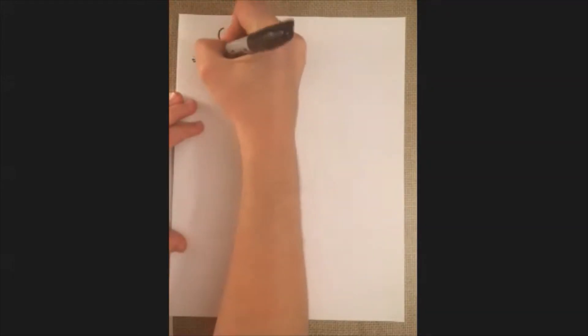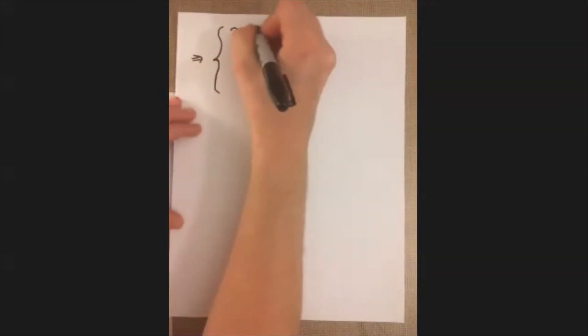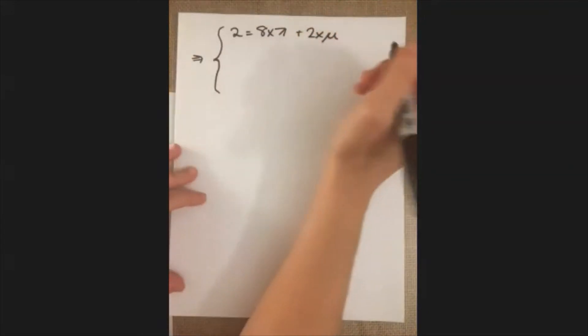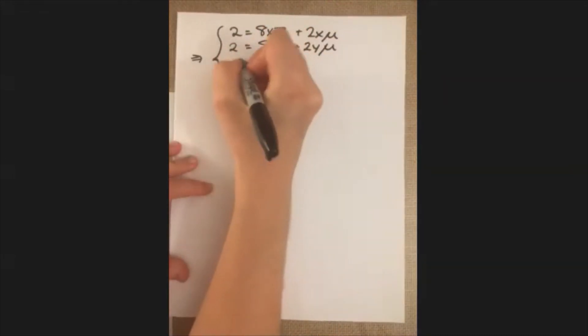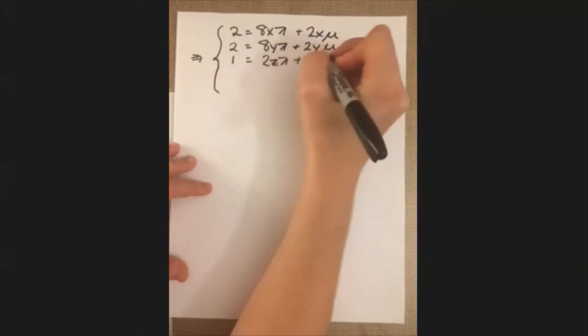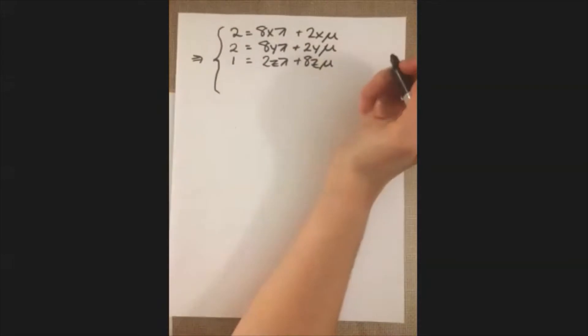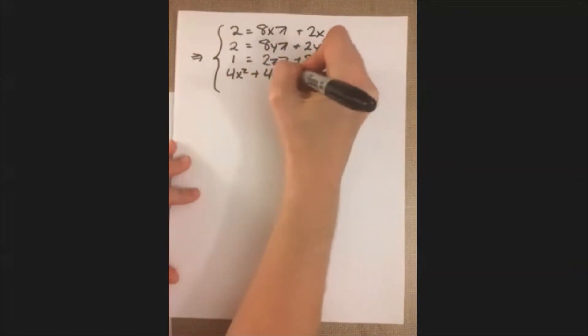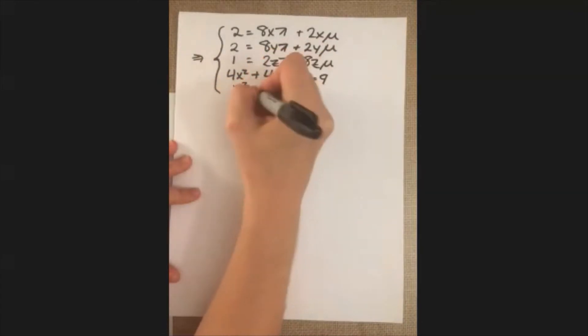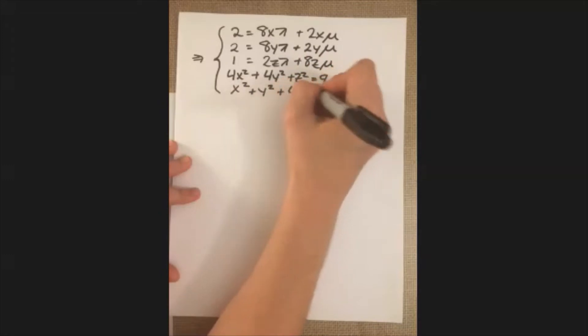From that we get a system of five equations — one for each component of our gradient plus the two constraints. The first is: 2 = 8xλ + 2xμ. Similarly, 2 = 8yλ + 2yμ. And then 1 = 2zλ + 8zμ. Then the two constraint equations: 4x² + 4y² + z² = 9, and x² + y² + 4z² = 9.